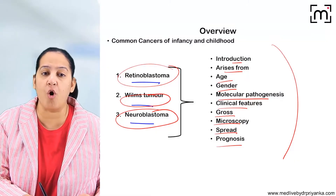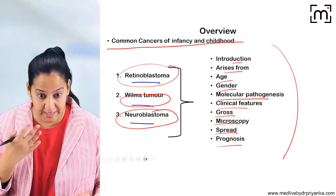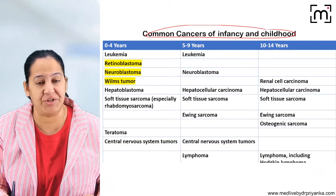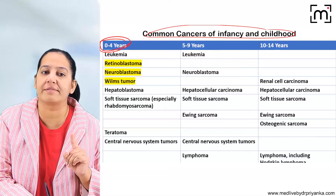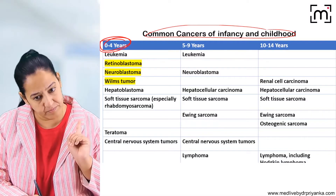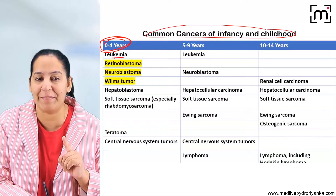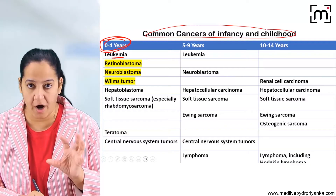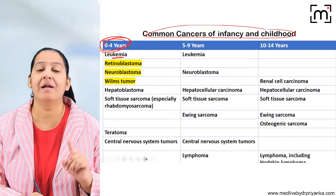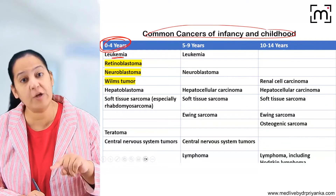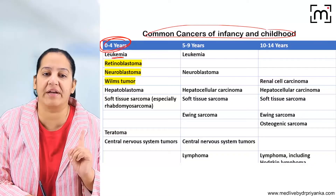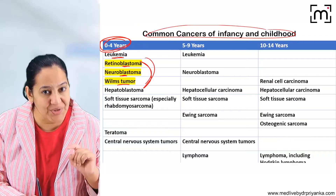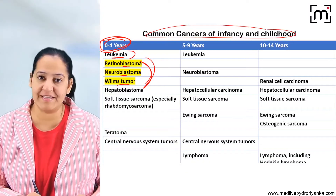Let me enumerate the common cancers of infancy and childhood by age. In 0 to 4 years, the most common cancer is leukemia — blood cancer with no solid discrete mass. The most common solid tumours in 0 to 4 years are retinoblastoma, neuroblastoma, and Wilms tumour, which I will teach in detail. The leukemias are described in the hematology section.